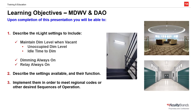NLIGHT output devices like power packs and NLIGHT enabled fixtures contain the setting Maintain Dim Level When Vacant. Furthermore, we may also wish to not allow the occupants of a space to switch lights off. The settings Dimming Always On and Relay Always On can be used to accomplish this behavior.